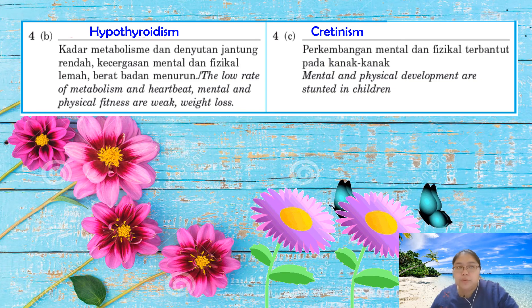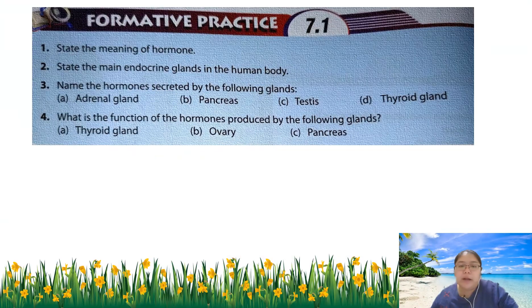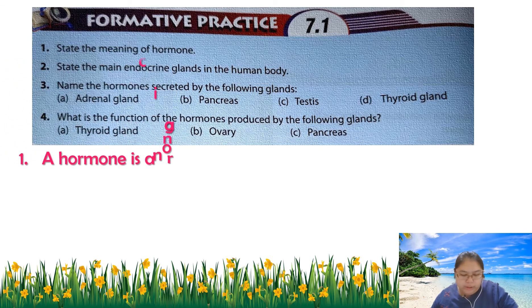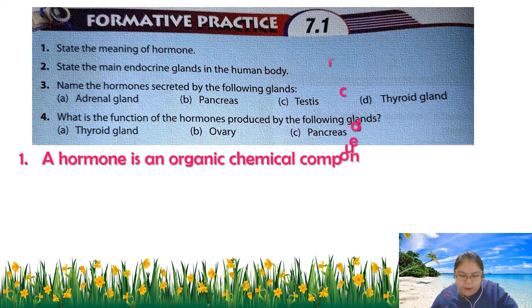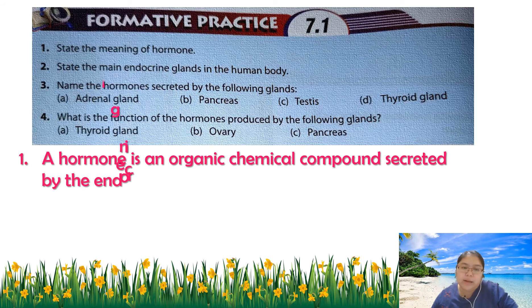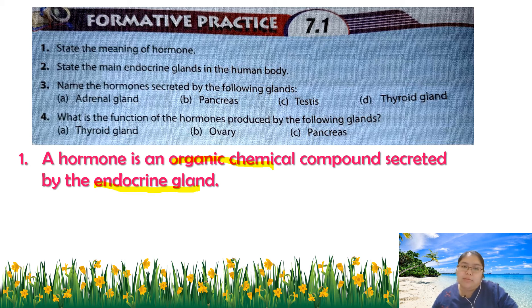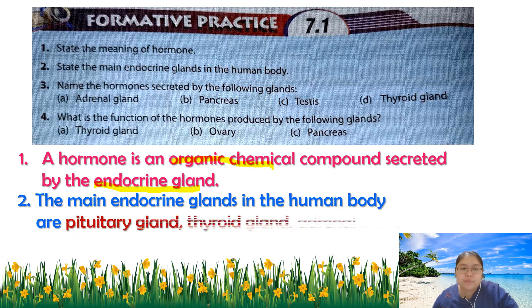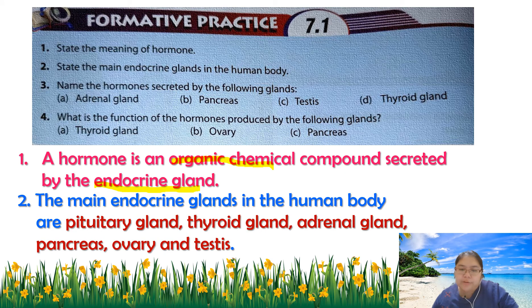Now we go to the formative practice from section 7.1. Question one: what is the meaning of hormone? A hormone is an organic chemical compound secreted by the endocrine gland — you must include the words 'organic chemical.' Question two: state the main endocrine glands in the human body — there are six: pituitary gland, thyroid gland, adrenal gland, pancreas, ovary, and testis.